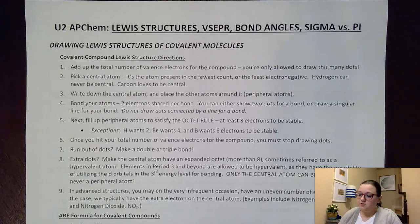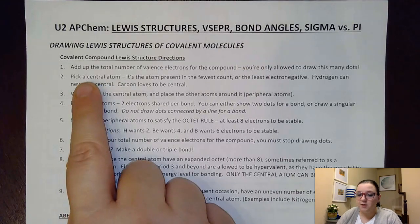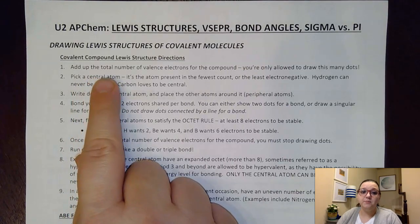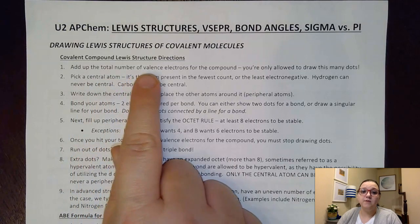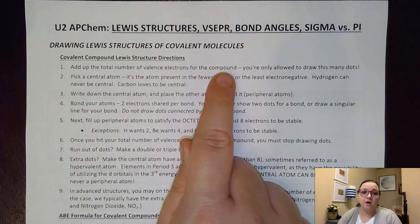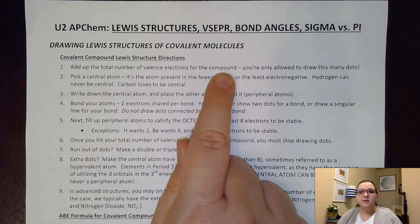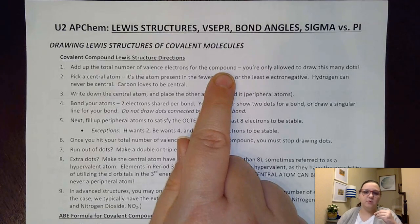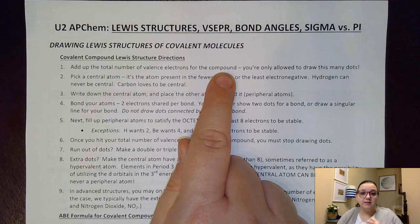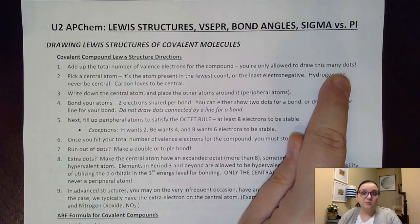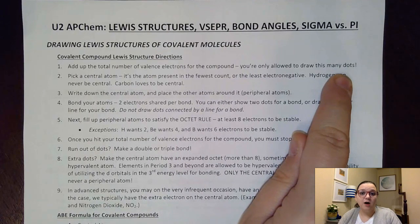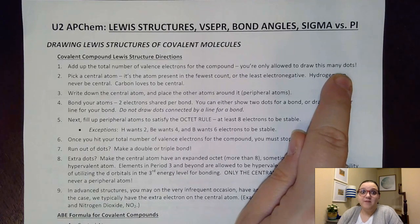With that said, the first step is to add up the total number of valence electrons for the compound. I would look at my elements, see how many valence electrons they bring, and tally all of that together. This is how many dots we're allowed to draw.